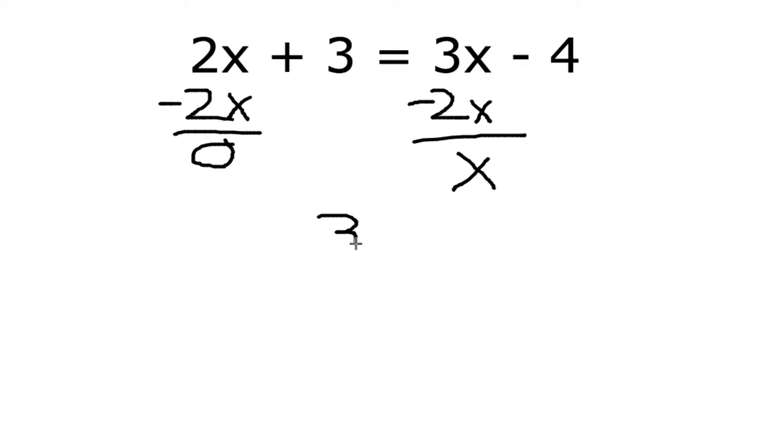So our problem now looks like 3 equals x minus 4. Now we want to try to get x by itself, right? So we want to try to move this negative 4 over to the other side of that 3.